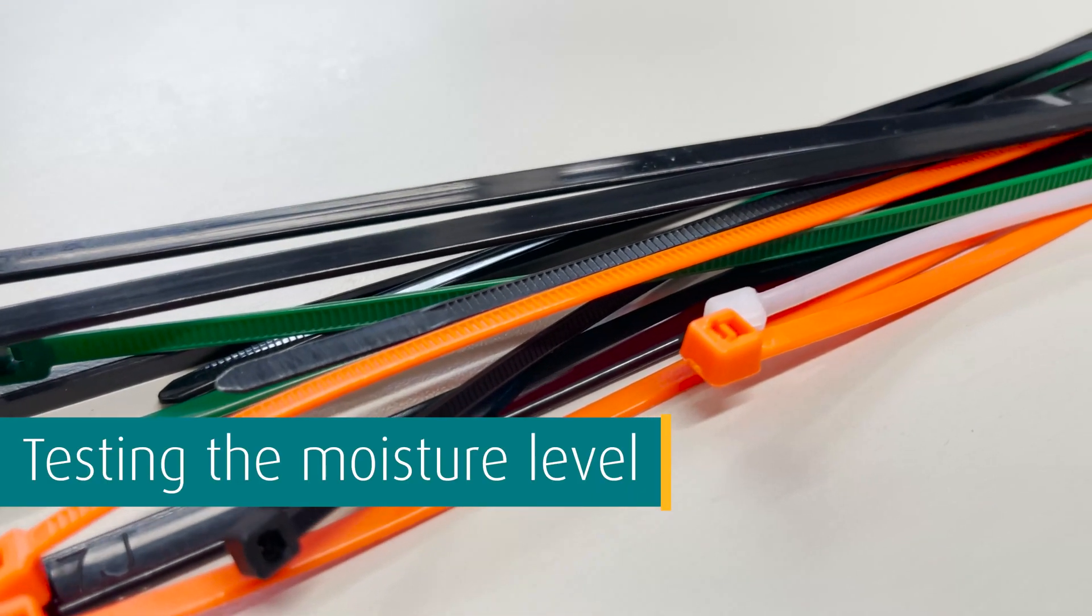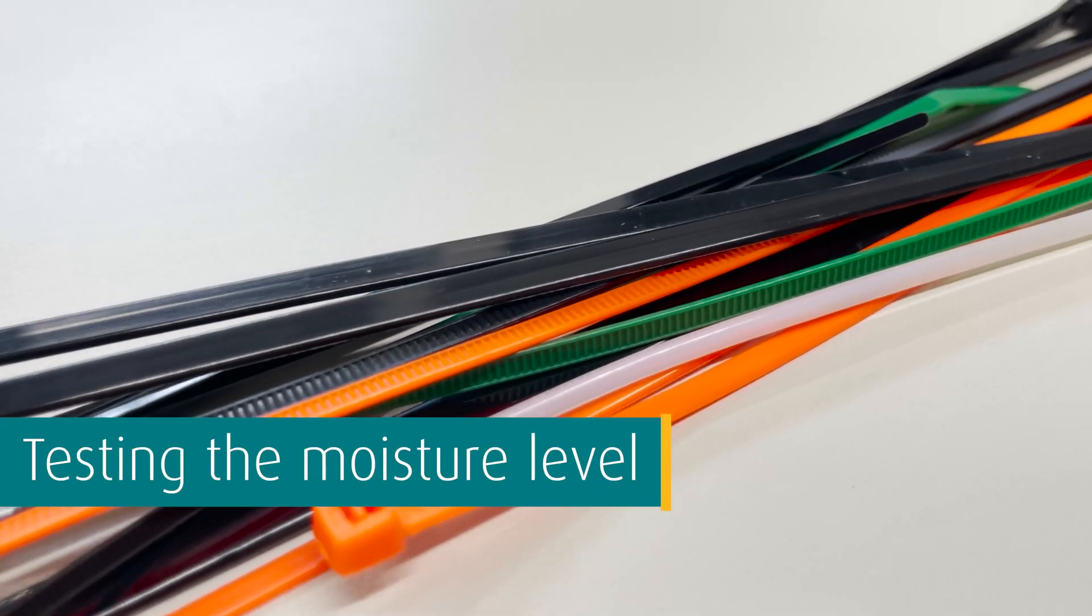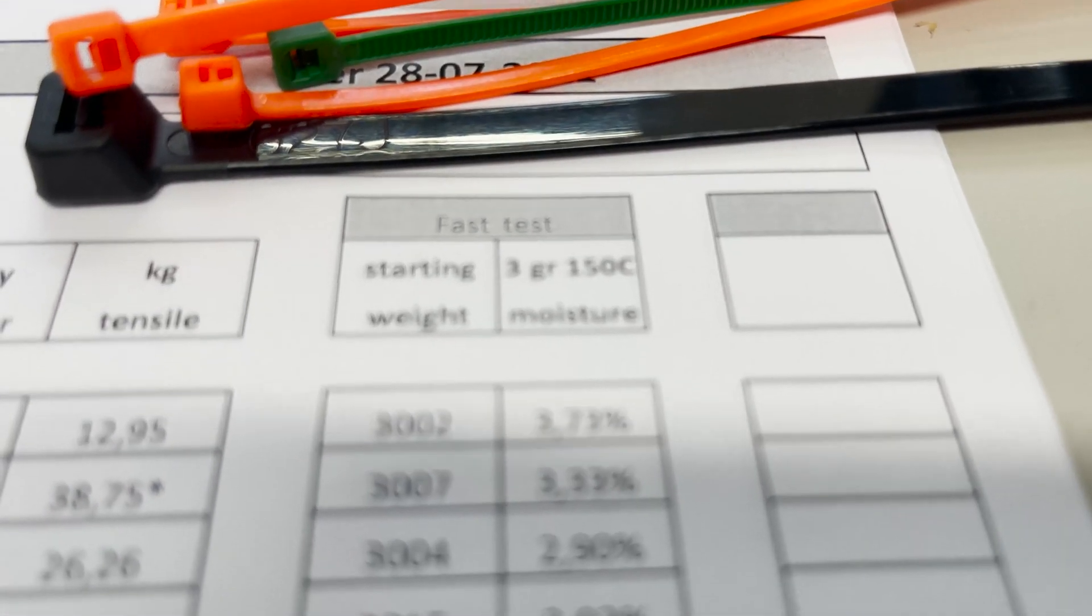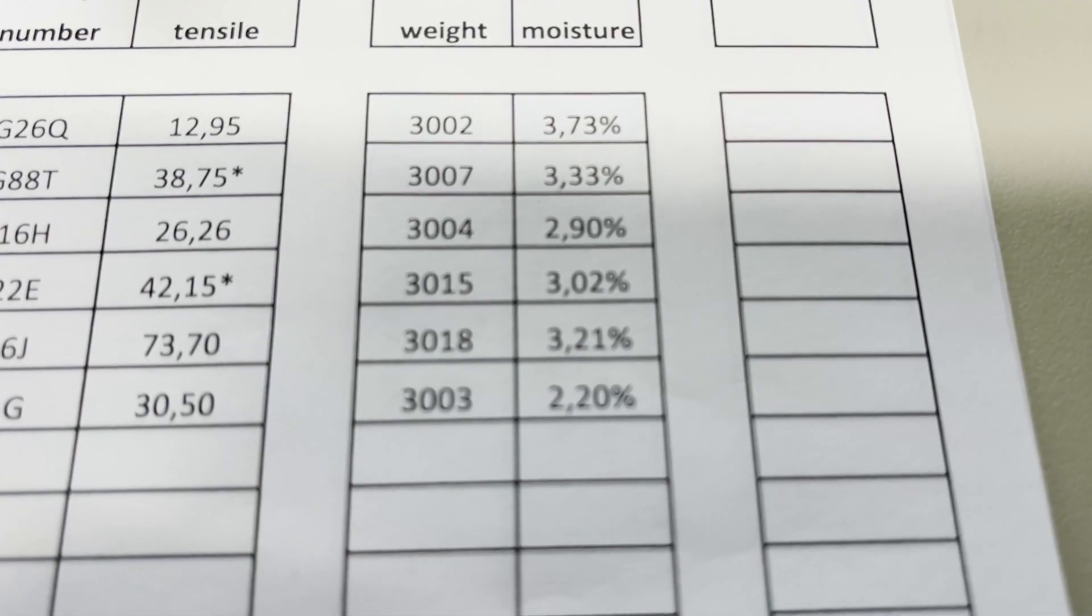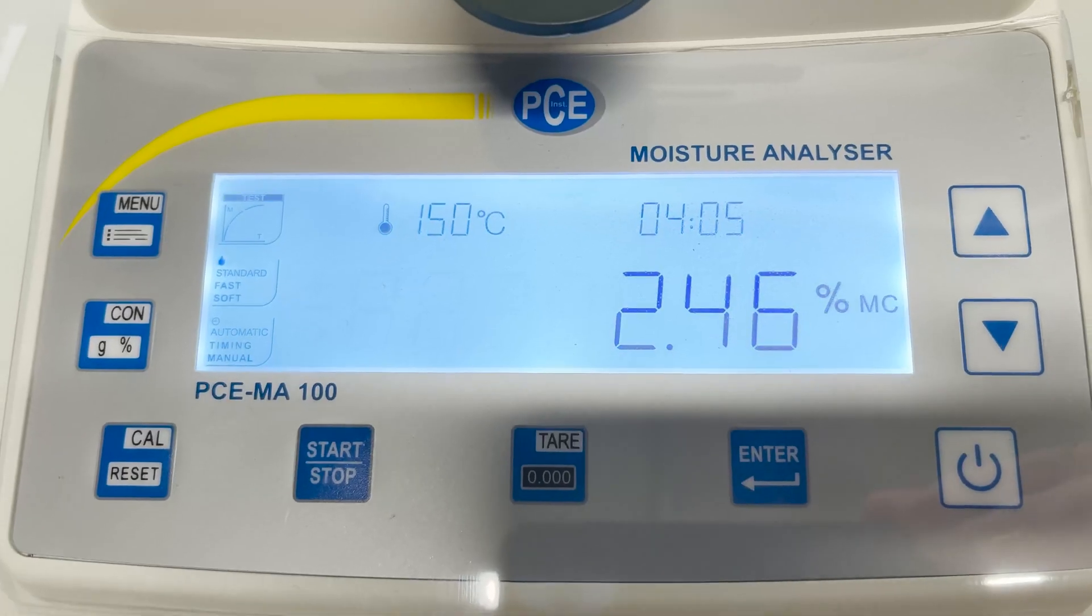The moisture content of a cable tie has an influence on tensile strength of the cable tie. It is therefore important that the moisture content of a cable tie is at a certain level. For this reason, we expose our cable ties to certain temperatures in order to measure the moisture content.